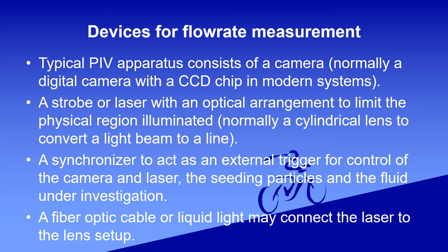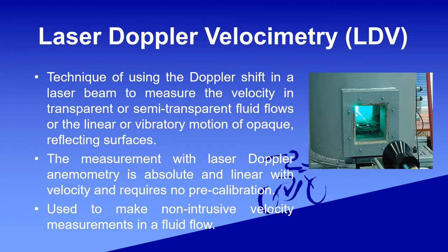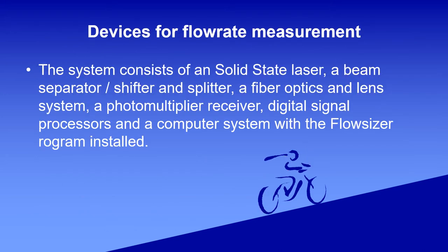A fiber optic cable or liquid light guide may connect the laser to the lens setup. The third device is Laser Doppler Velocimetry — a technique using the Doppler shift in a laser beam to measure the velocity in transparent or semi-transparent fluid flows. Measurement with laser Doppler anemometry is absolute and linear, used to make non-intrusive velocity measurements in a fluid flow.